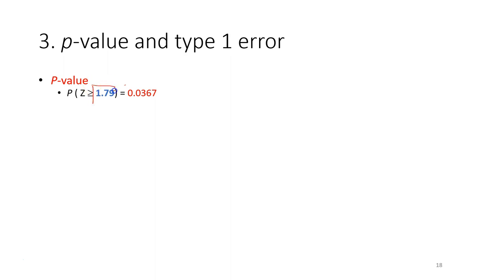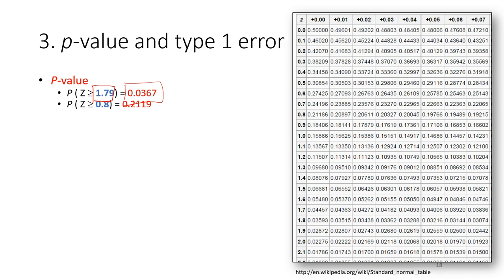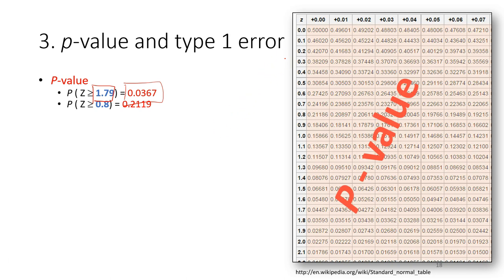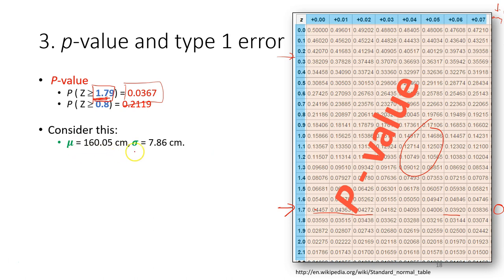To get the p-value, we use the standard normal table, as covered in lecture 3 where you learned to calculate the z-score. From the z-score you can look up the p-value. For example, if z is 1.79, go to row 1.7 and column 0.09 in the table to find the corresponding probability.